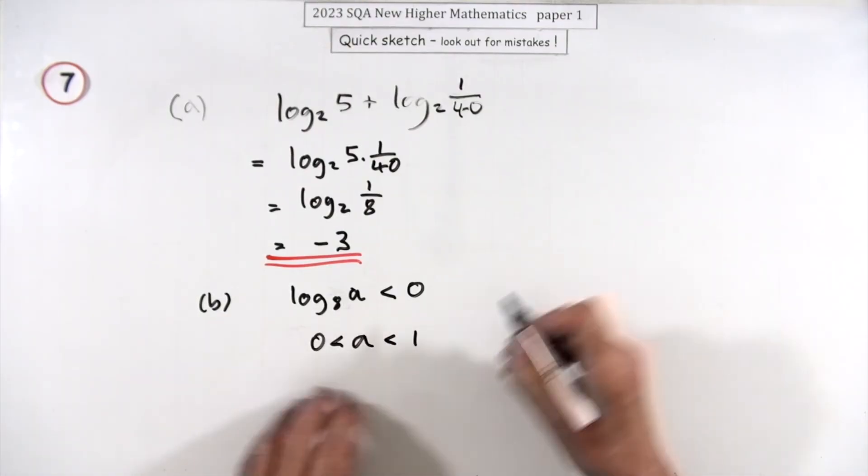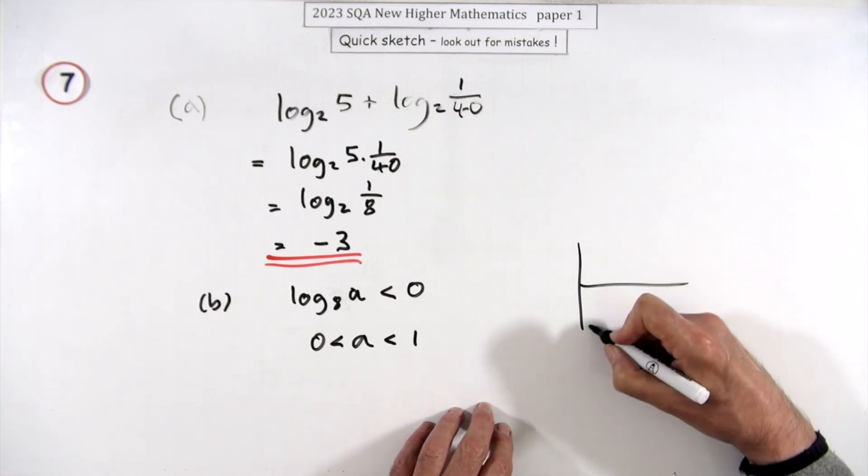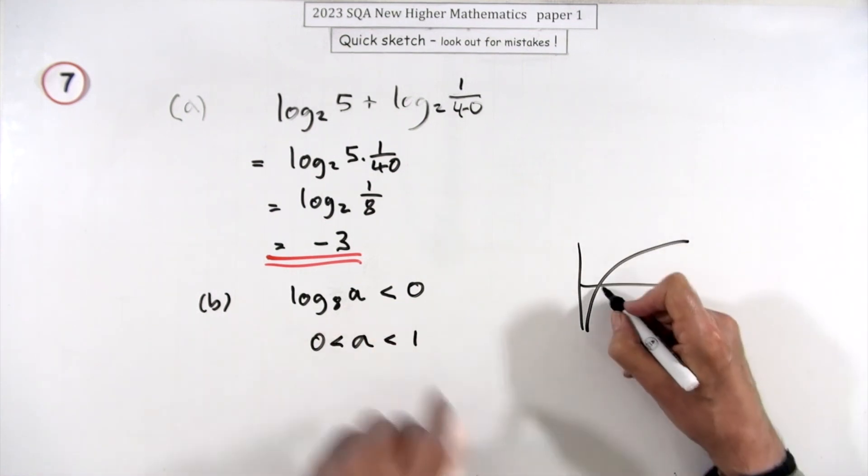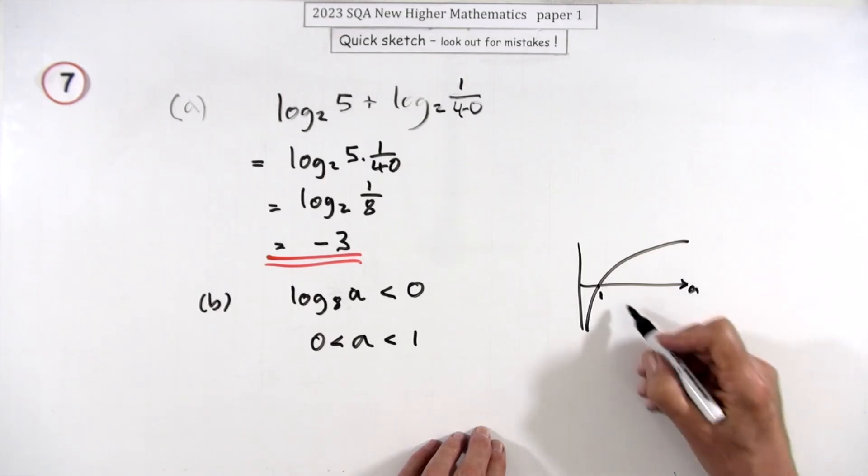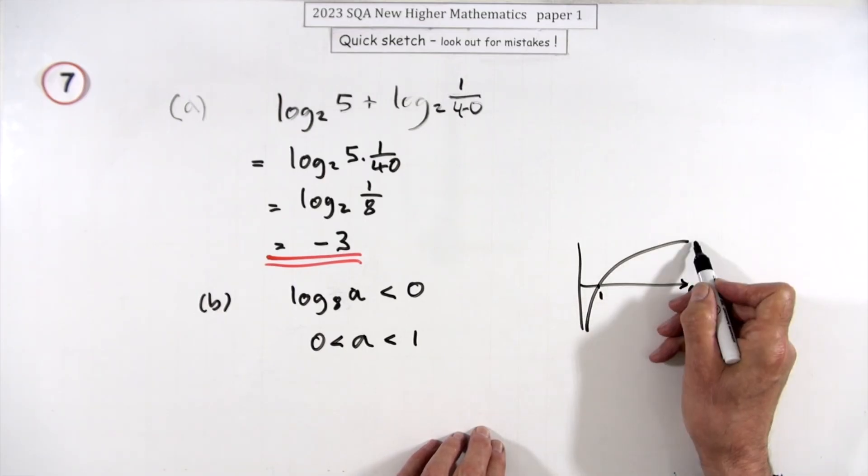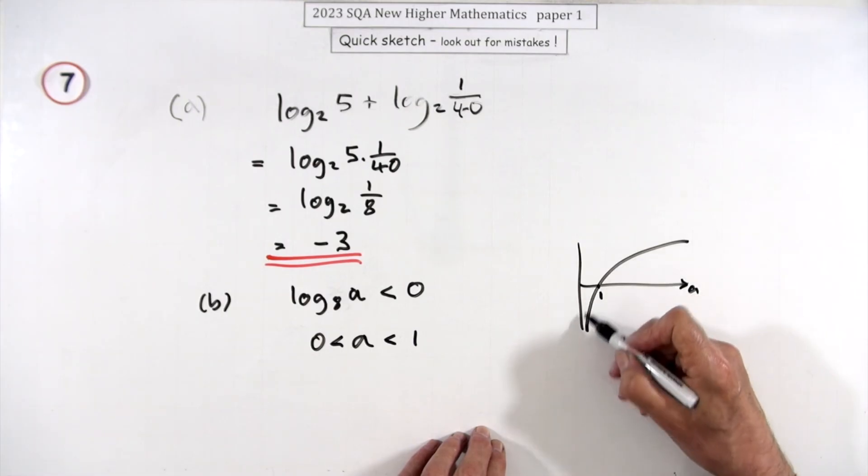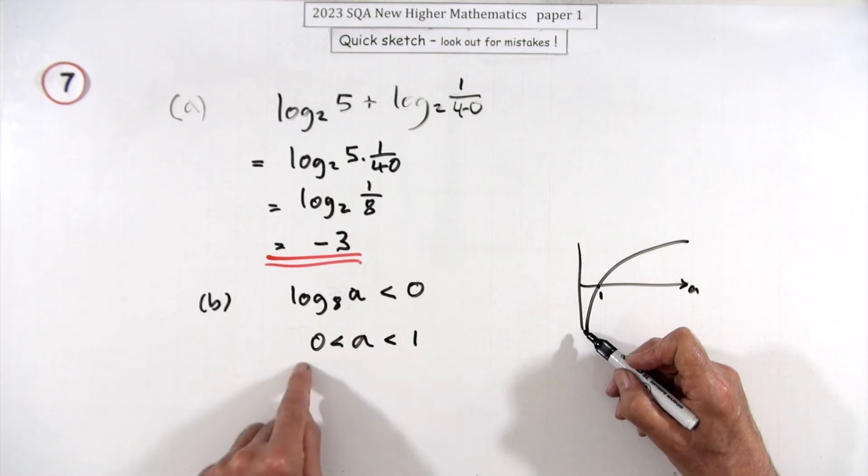Well that just means that a would have to be between one and zero. You just think of the log graph, doesn't matter what the base is, it cuts at one. Above one it's positive, at one at zero, below one it's negative, but it can't reach zero, so it's between one and zero.